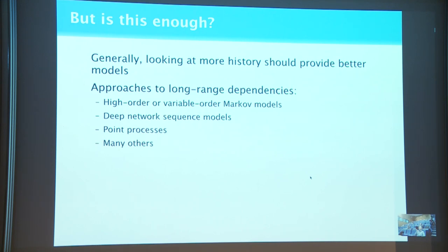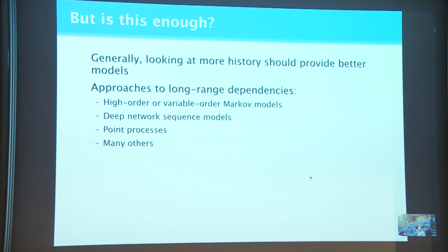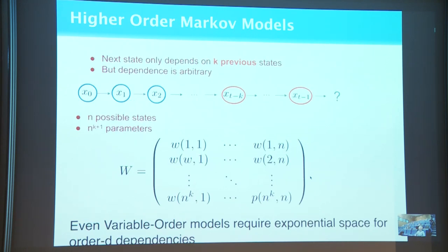Generally, looking at more history than a single most recent element should provide better models. There are many approaches to using long-range dependencies. The earliest and most pervasive is to use higher-order Markov processes, but these days everybody's talking about deep network sequence models, which learn neural networks to control the evolution of the process. There are also point processes, which allow you to predict the time of the next consumption and make statements about likelihood within a particular interval.